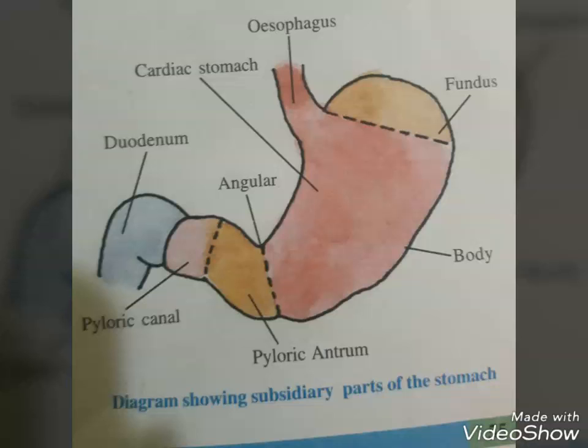Starch, with the help of salivary amylase at pH 6.8, is converted into maltose. The mucosa of the stomach has gastric glands. Gastric glands have three major types of cells: mucus neck cells which secrete mucus; peptic or chief cells which secrete the proenzyme pepsinogen; and parietal or oxyntic cells which secrete HCl and intrinsic factor.